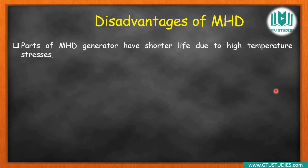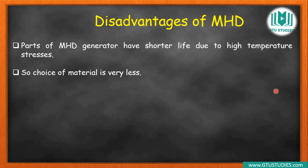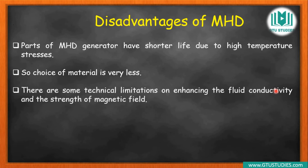There are also some disadvantages. First, parts of the MHD generator have a shorter life due to high temperature stresses, because the system operates at very high heat energy levels. Additionally, there are some technical limitations on enhancing the fluid conductivity and the strength of the magnetic field. Higher electrical conductivity of the fluid is needed to produce electrical energy efficiently, but increasing it technically has limitations.